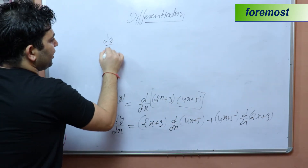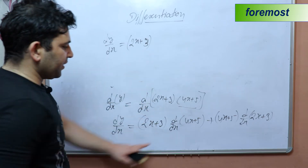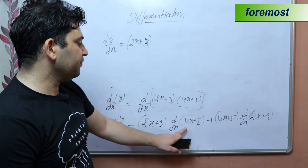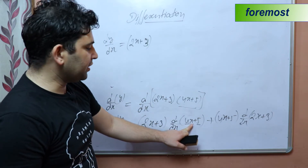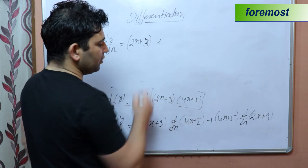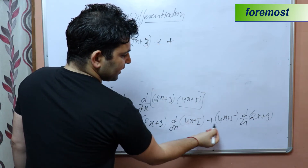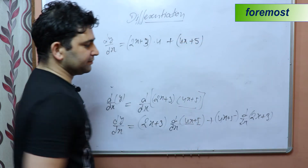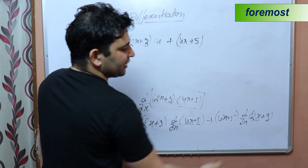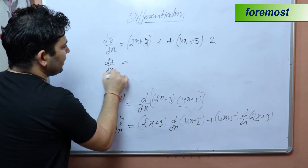dy/dx equals (2x + 3) as it is, and now differentiating (4x + 5): differentiation of 4x is 4 and differentiation of 5 is 0, giving 4. For the second term, (4x + 5) as it is, and differentiating (2x + 3): differentiation of 2x is 2 and differentiation of 3 is 0, giving 2.